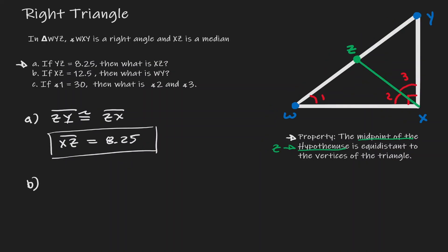Now let's take a look at example b. Within this example we know that XZ, which you can find here, has a value of 12.5, and what we want to find information of is the length of WY, which you can find here.